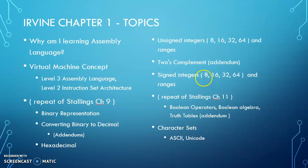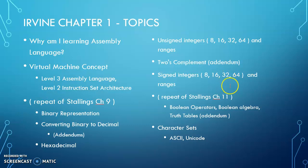Another slide in Irvine Chapter 1 shows the ranges for signed integers. The signed range for 32-bit numbers is the same as int in Java. So when we declare an int in Java, it is a signed 32-bit integer — that's why the range is negative 2 billion to positive 2 billion. Back in Chapter 1, the comment was made that sometimes we're shielded from how the underlying computer works, and sometimes we're not — we just didn't realize it.